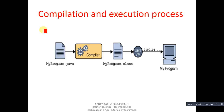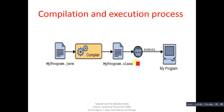You can view this diagram to easily understand the compilation and execution process in Java. Here, 'MyProgram.java' is the source code, which is compiled with the help of the compiler to produce 'MyProgram.class'. Note that the dot class file is automatically created with the name of the class used in your source code. We then run this dot class file with the Java Virtual Machine, and the output is displayed on your desktop.